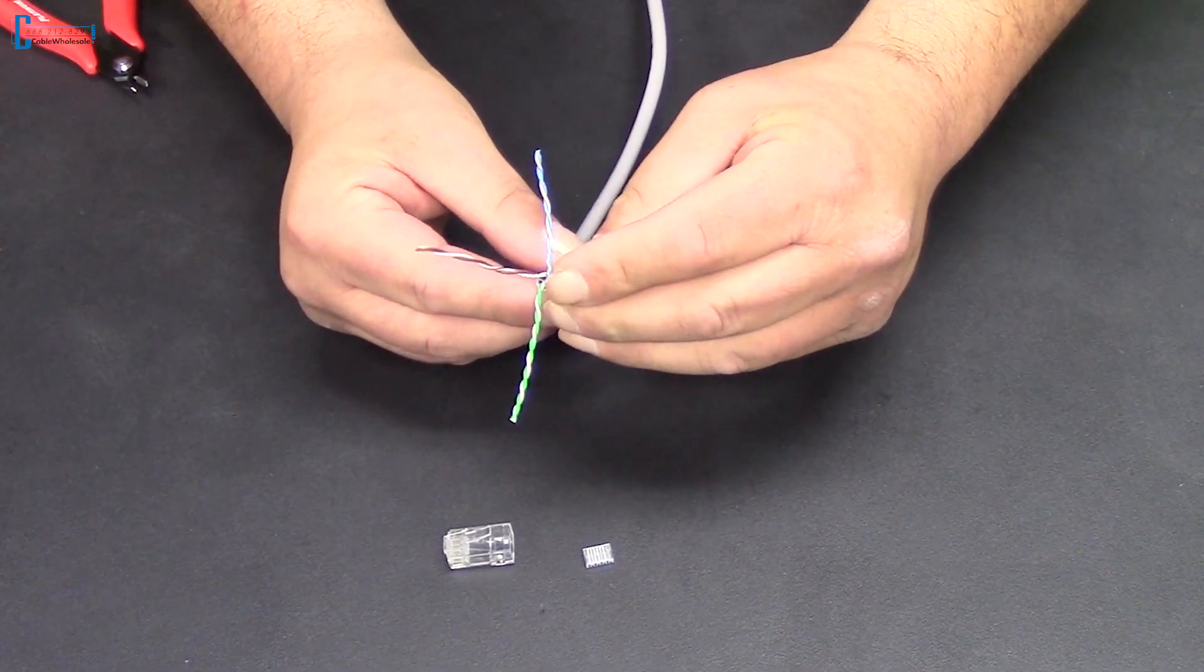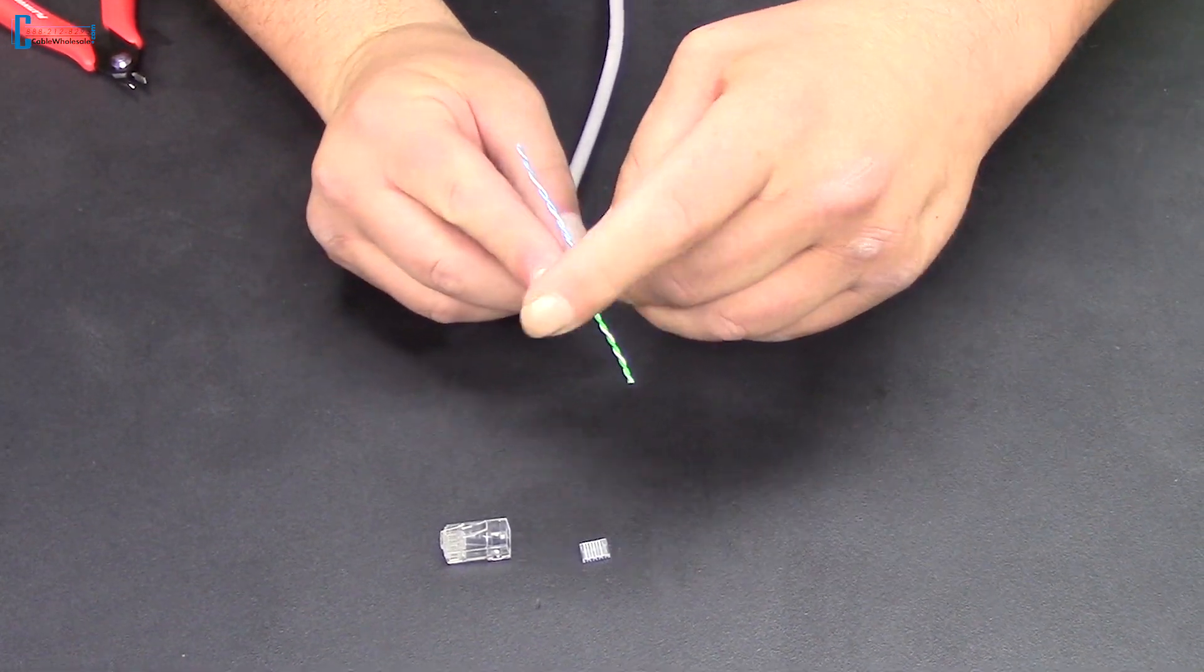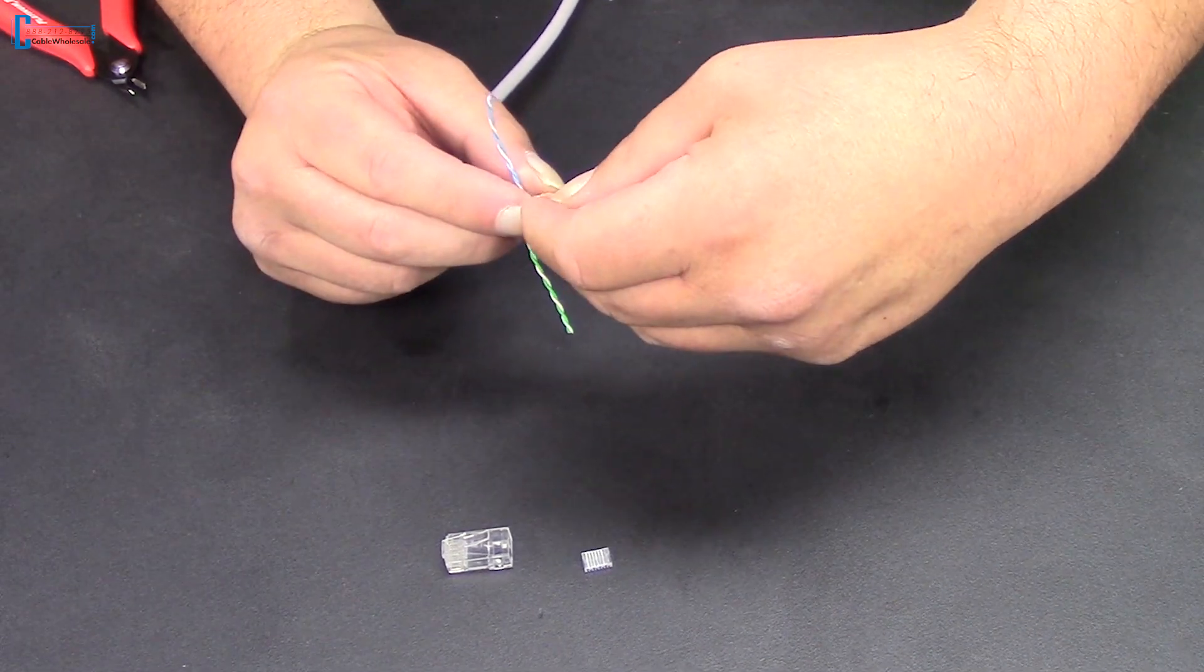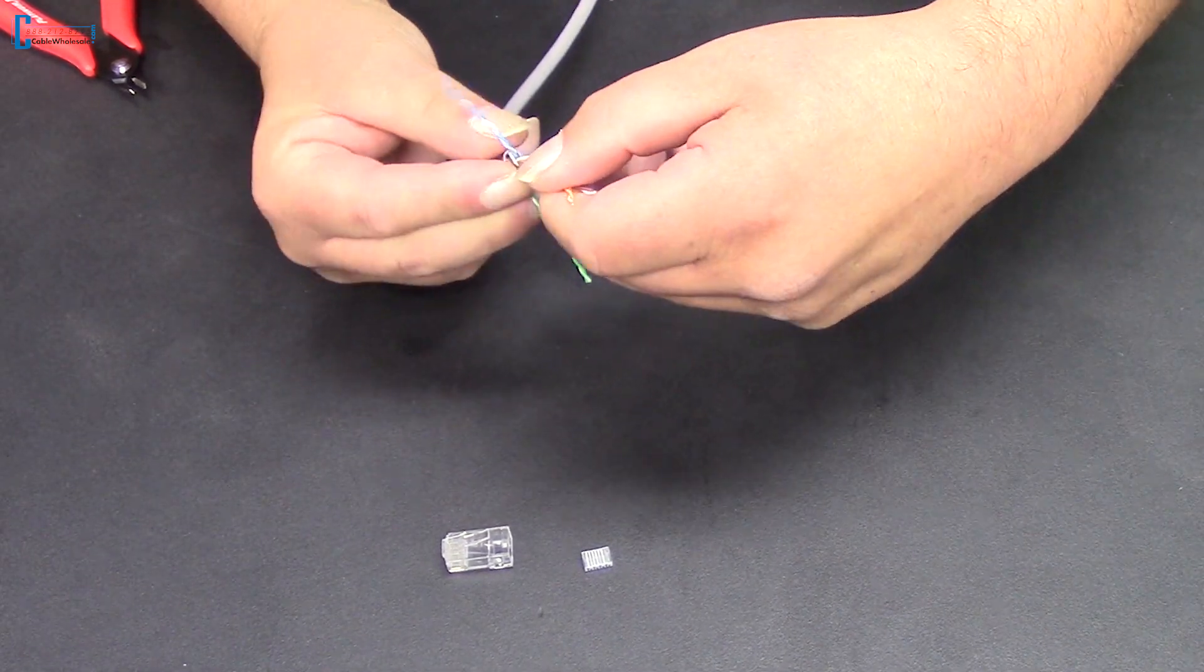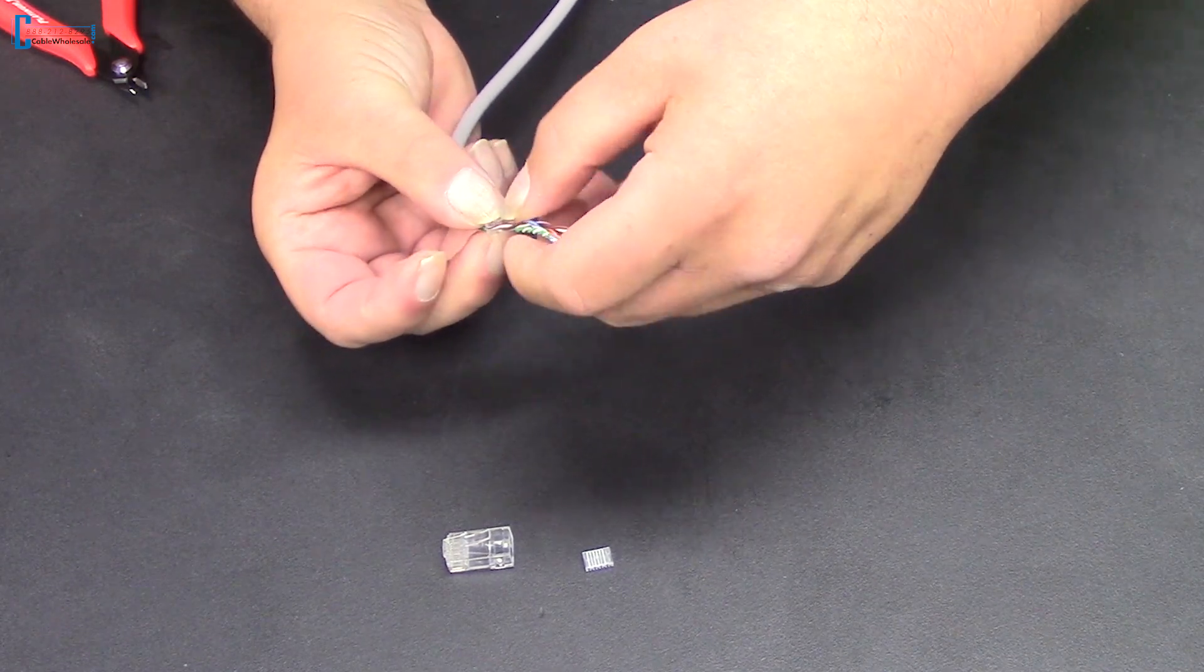The wire separator goes to the base of the exposed conductors. We'll separate the orange conductors from the brown. Here in the middle, we'll separate the green conductors from the blue.